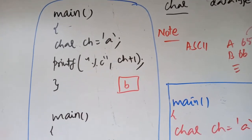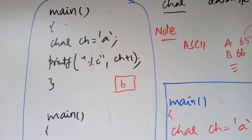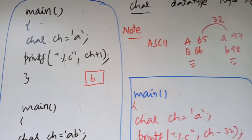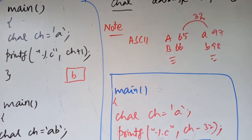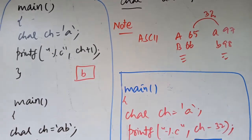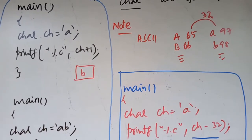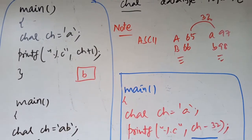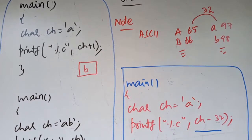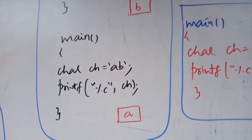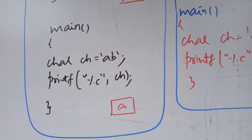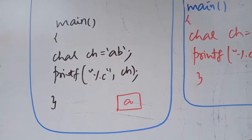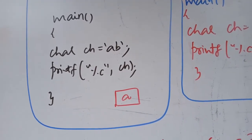Character constants are written in single quotations. The variable ch is of type character. We use %c with ch to display the output. We will also discuss the ASCII code. ch is initialized and used to accept character input.